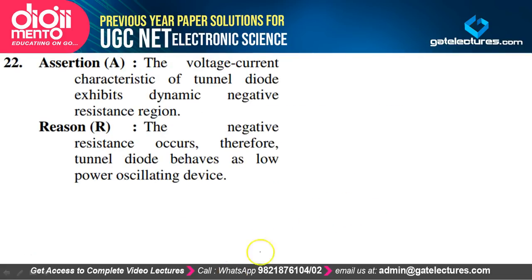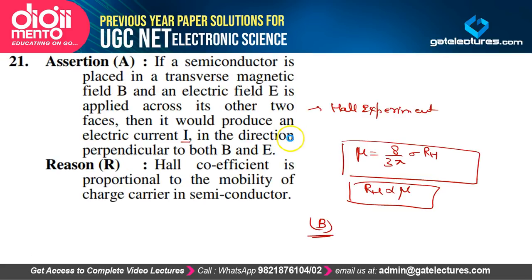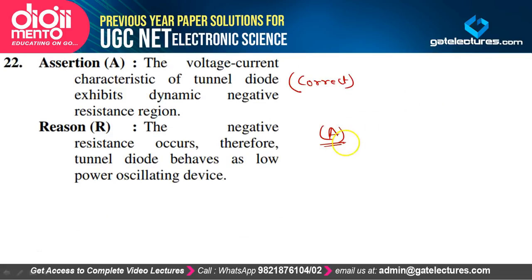Question 22: The V-I characteristics of a tunnel diode exhibit a dynamic negative resistance region — assertion is correct. Therefore, the tunnel diode behaves as a low-power oscillating device — reason is also correct and R is the correct explanation of A. Option A is correct: both are true and R is the correct explanation of A.